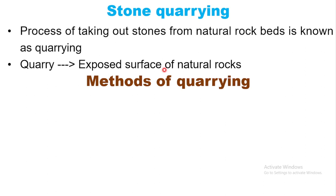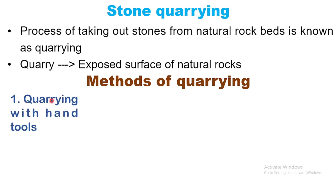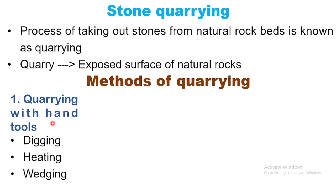Methods of quarrying: there are three methods. The first method is quarrying with hand tools. There are three sub-methods: digging, heating, and wedging.